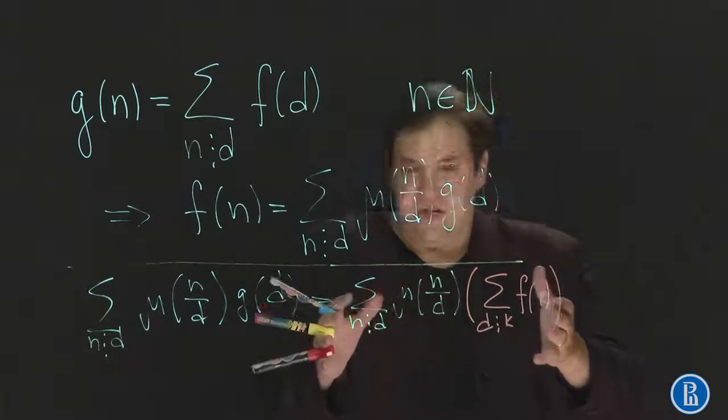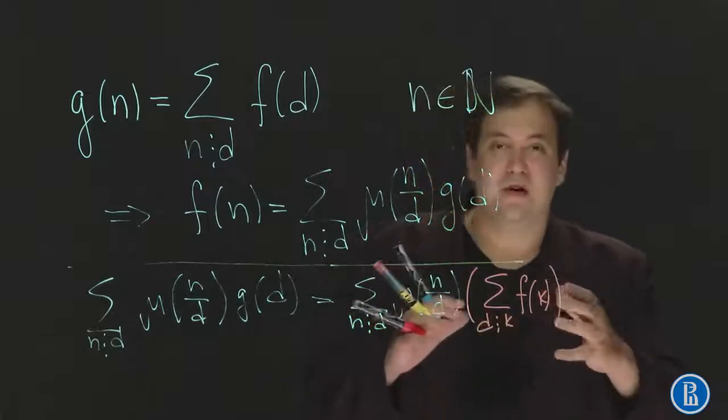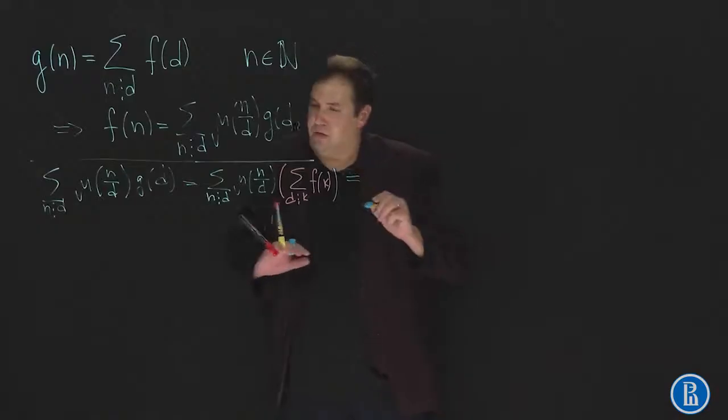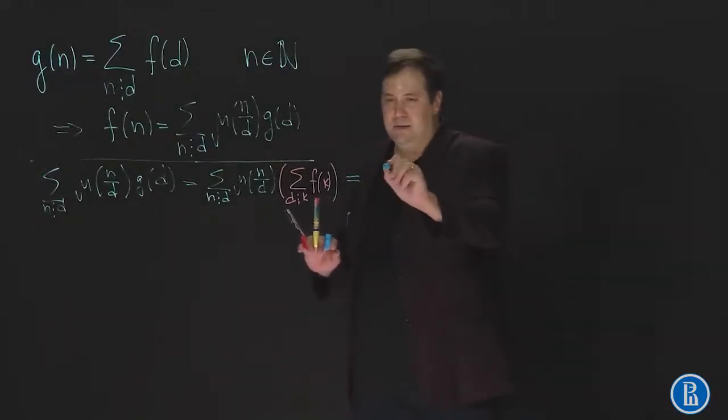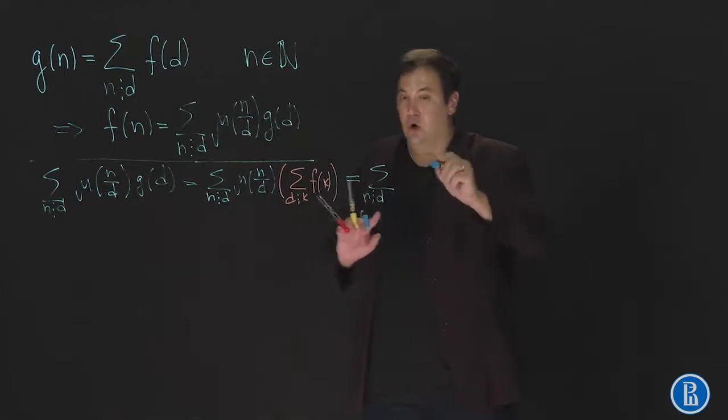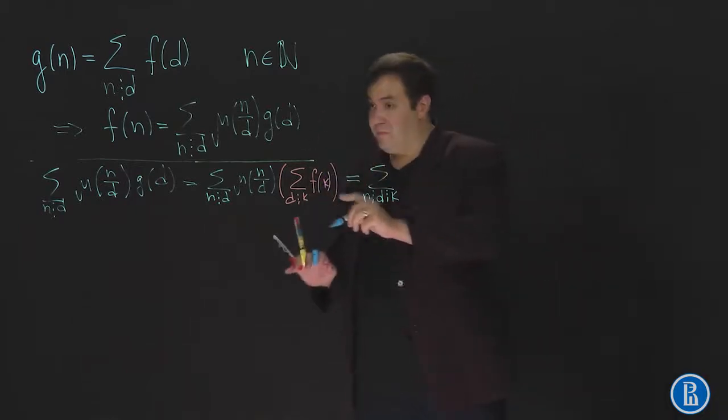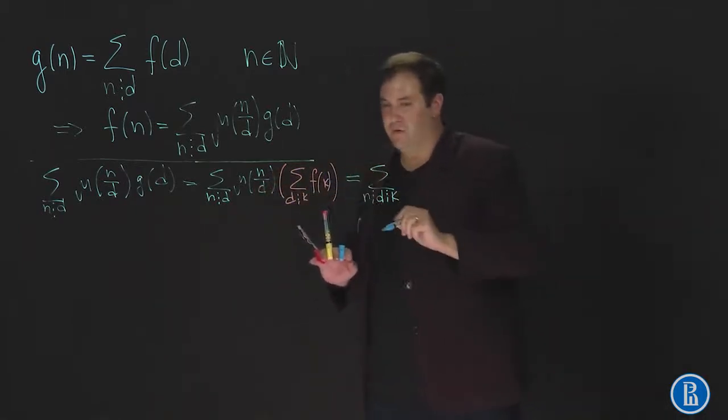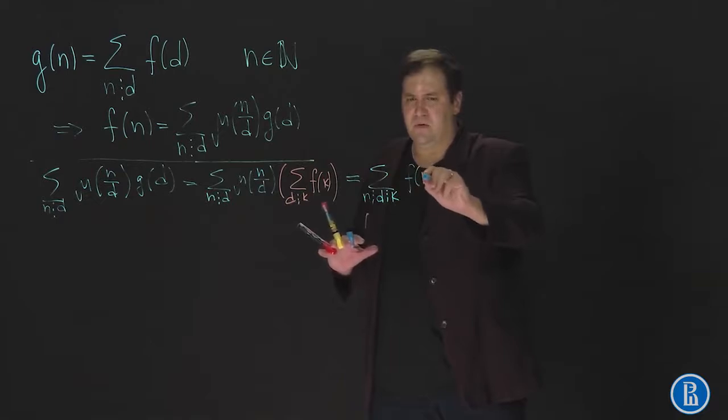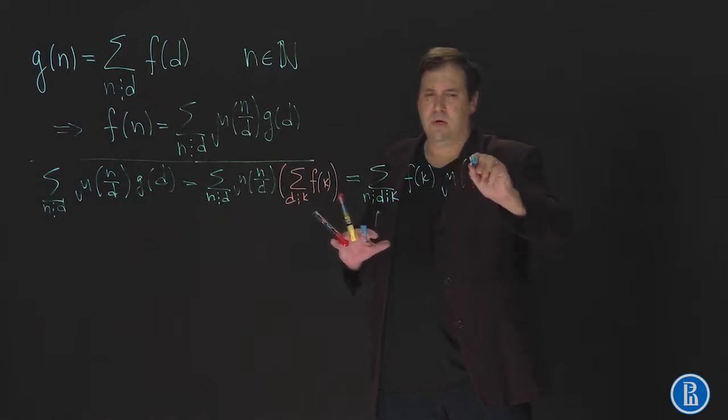And now just transform this sum of sums into a large sum by changing the order of summation, the order of addition. Thus this is equal to sum over all divisors of n and all divisors of d. And here we have mu of n over d multiplied by f of k. And we can reorder this sum and write first f of k and then multiply this by mu of n over d.